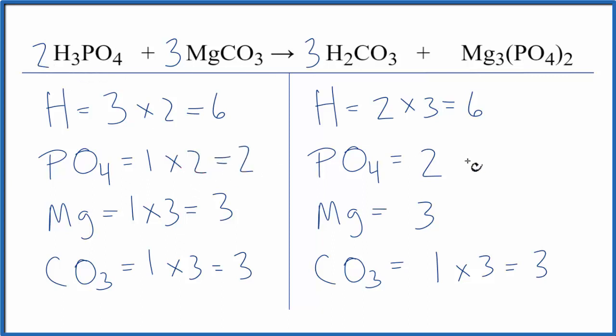So we're done. This equation is balanced. By considering these polyatomic ions, the phosphate and the carbonate as one thing, that makes the balancing a whole lot easier. But if you count them individually, that's okay. You'll still get the same coefficients here.